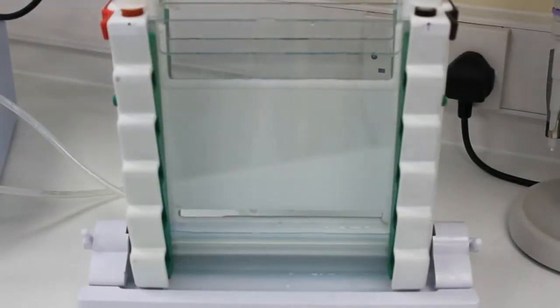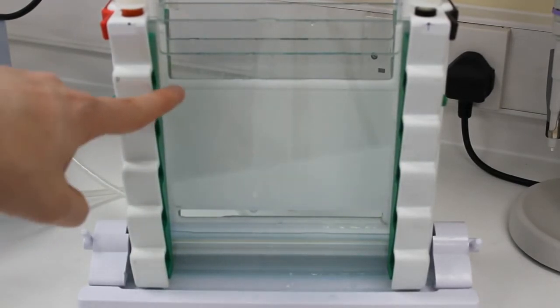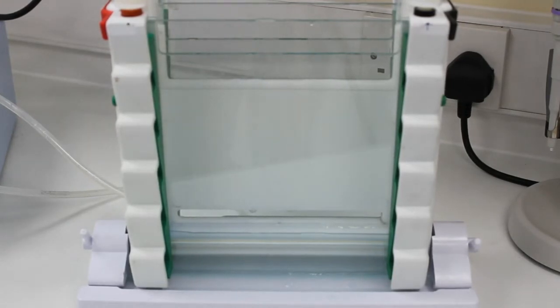So we've poured our gels, the first denaturing gradient gel, up to this level and now we're going to wait for this to polymerize and then we can add our stacking gel.